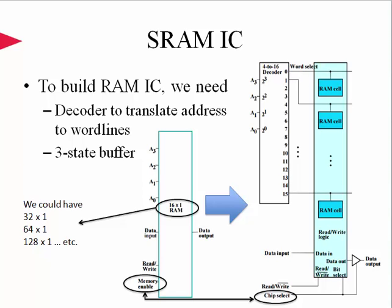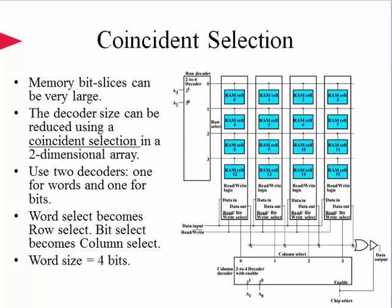The bit cell combined with the decoder provides the capability of addressing word lines. However, for larger bit cells requiring higher-order decoders, the logic becomes more complicated. The alternative is called coincident selection, which reduces decoder size using a two-dimensional array. This is a planar architecture where row and column selects are used to address a specific cell in a 2D cell grid. In our implementation, we used two decoders — one for words and one for bit slices. Word select becomes row select and bit select becomes column select. The word size is four bits long, and we use four 4x1 SRAMs in this example.